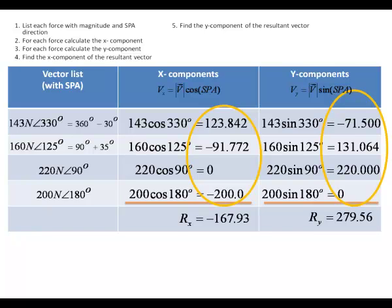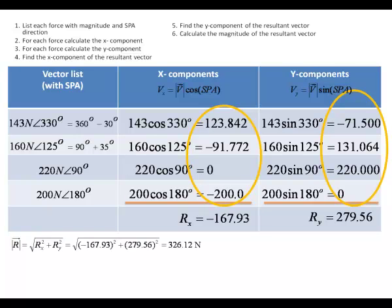We then need the actual magnitude of the resultant vector. To get that, we're going to have to use our Pythagorean theorem. You can see the calculation on the overhead. Our result winds up being the magnitude of the resultant vector is 326.12 newtons.